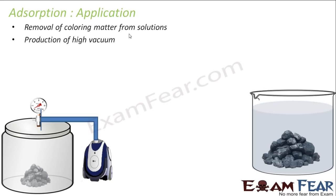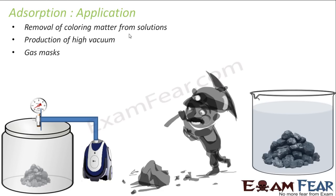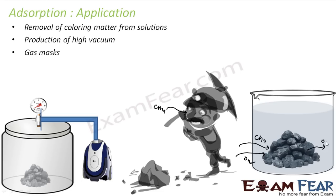The next application is the gas mask, used by coal mine workers because poisonous gases like methane are present in coal mines. Inhaling methane is harmful, so these gas masks contain activated charcoal. The activated charcoal adsorbs all the methane — for example, if oxygen and methane both enter the mask, the methane is adsorbed and only oxygen passes through, keeping the person safe.